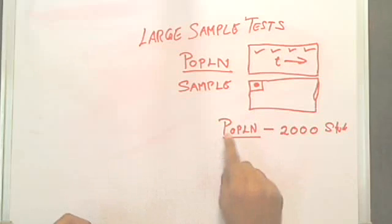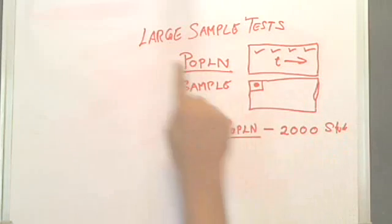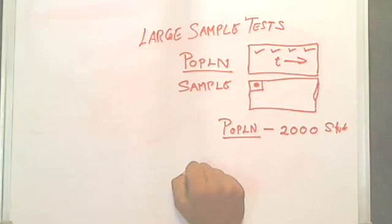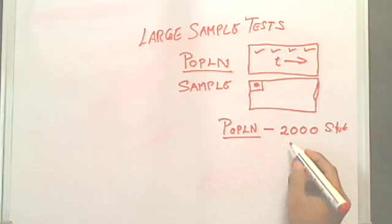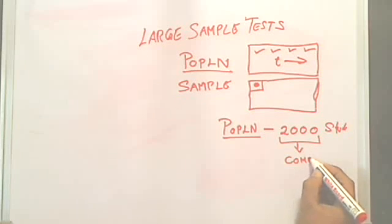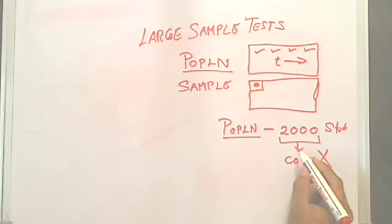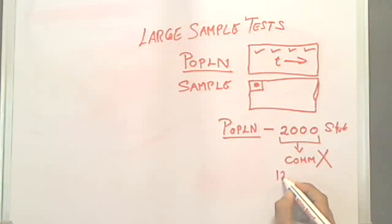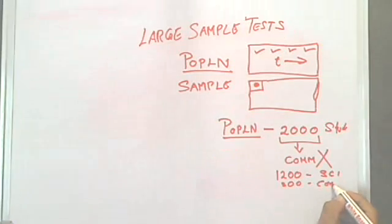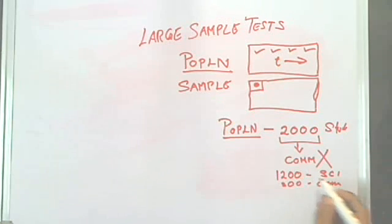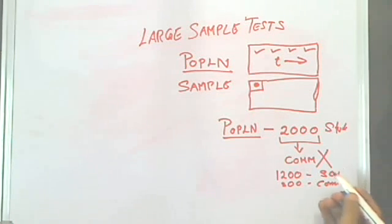If I were to study the entire 2000 students by asking how many know large sample tests, the first problem is that not all 2000 are commerce students. About 1200 are science students and only 800 are commerce. Asking all of them would give a skewed conclusion — maybe 60–70% would know nothing about large sample tests — which kills my assumption.